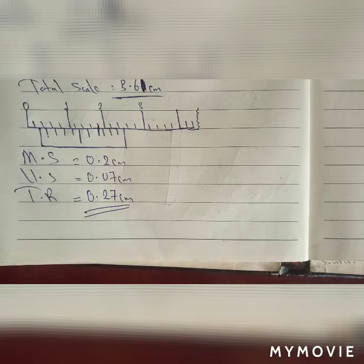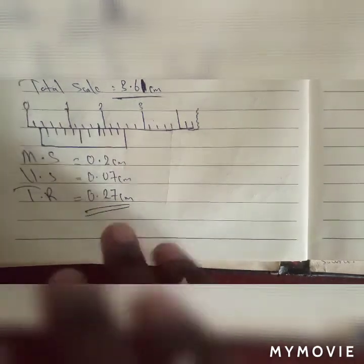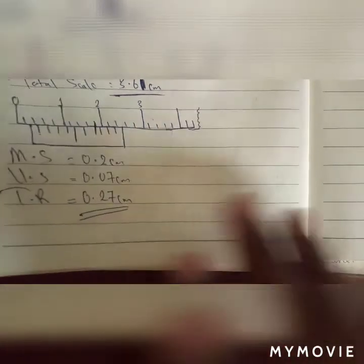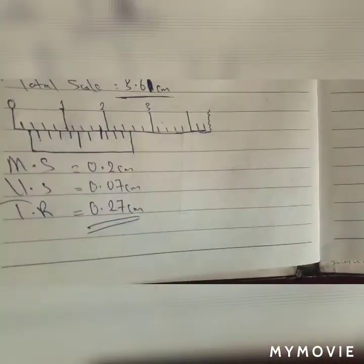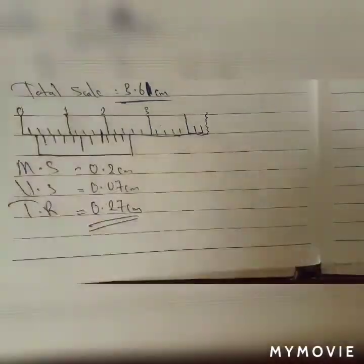So that's it for the Vernier caliper — very simple. Just go through this once again or practice on your own to get to understand what we did. Very simple. Okay, now let's do the next one — the micrometer screw gauge readings.